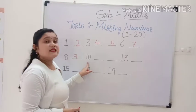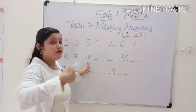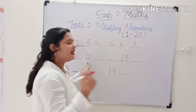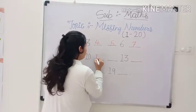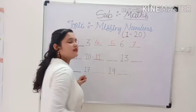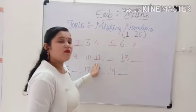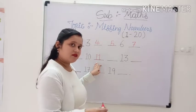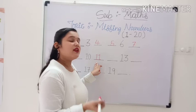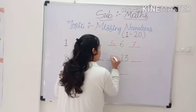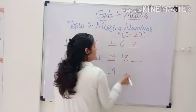This is number 10. Which number comes after 10? 11. Very good. 11. This is number 11. Which number comes after 11? 12. Very good. 12.